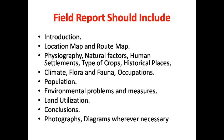Next, include climate, flora and fauna, and occupations. How is the climate of that region — heavy rainfall, harsh climate, or dry summers? Flora and fauna means what crops, flowers, and vegetables you find there and what types of animals live in that region. Also include what occupations people do there — if visiting a village, what is the main occupation and what are the subsidiary or allied occupations.